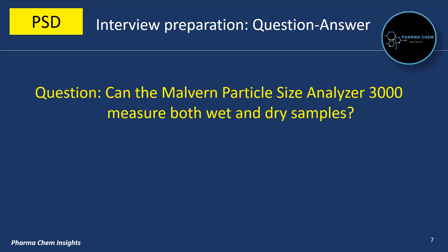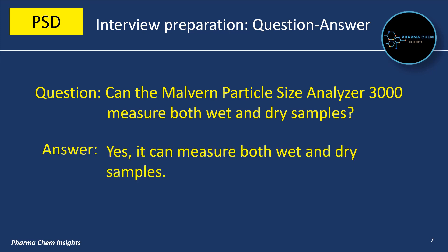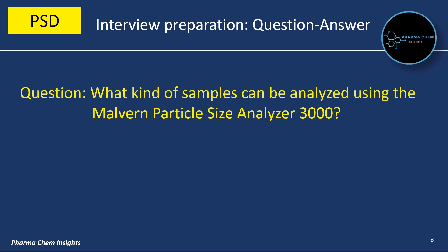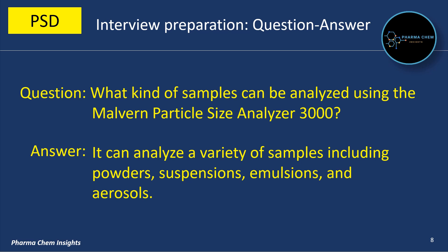Can the Malvern Particle Size Analyzer 3000 measure both wet and dry samples? Yes, it can measure both wet and dry samples. It can analyze a variety of samples including powders, suspensions, emulsions, and aerosols.